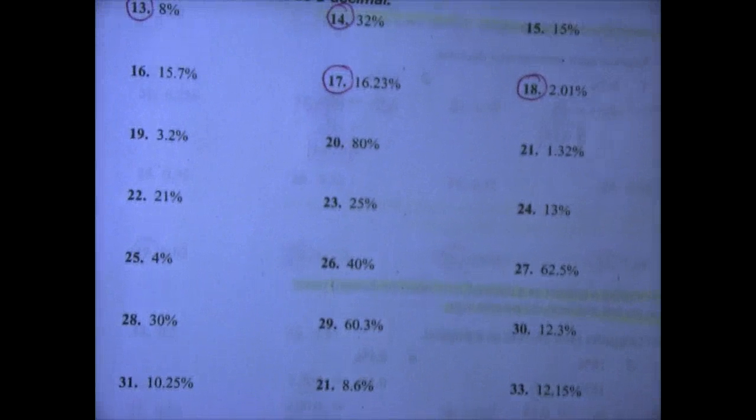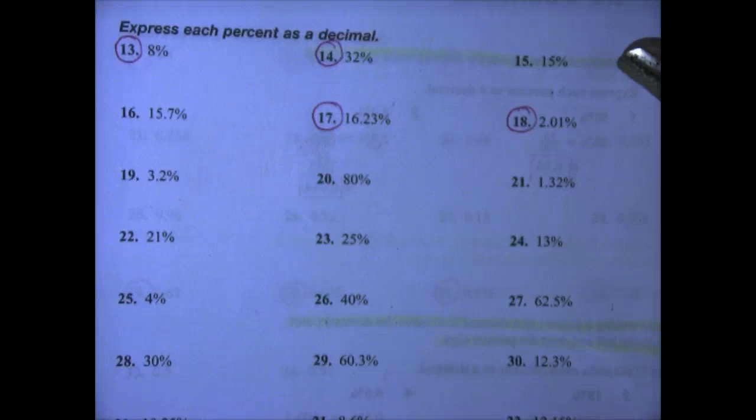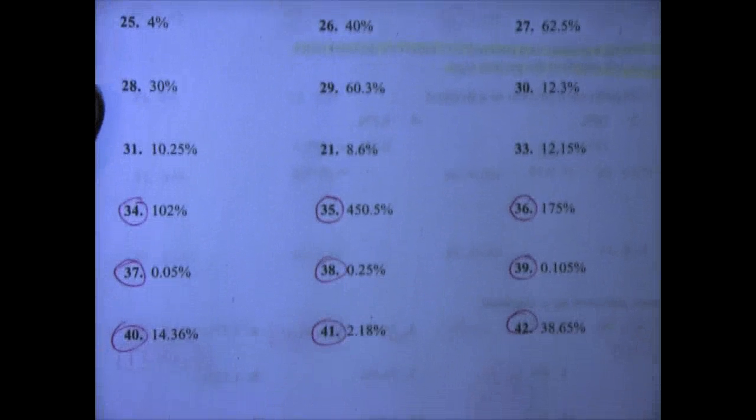We're on skill 35, page 70, for your homework assignment. You'll have a few more of these since they're pretty simple. We're going to do the circle of problems 13, 14, 17, and 18. And then let's move down to the bottom, and you'll do 34 through 42.